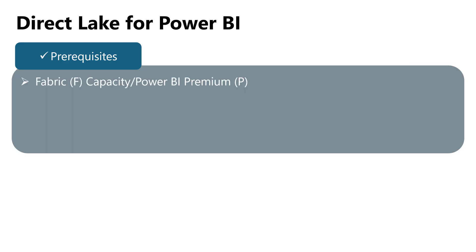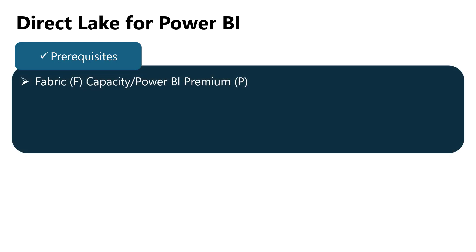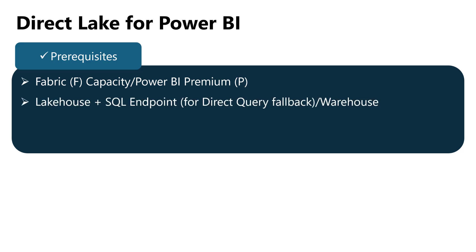First and most importantly, you can use Direct Lake only with Fabric capacities — marked as F capacities — and Power BI Premium capacities, known as P capacities. This means that if you are currently on Power BI Shared Capacity or a Premium Per User license, you won't be able to use Direct Lake storage mode. Next, you'll need either a lakehouse or a warehouse in your Fabric capacity, and your data must be stored in Delta format.